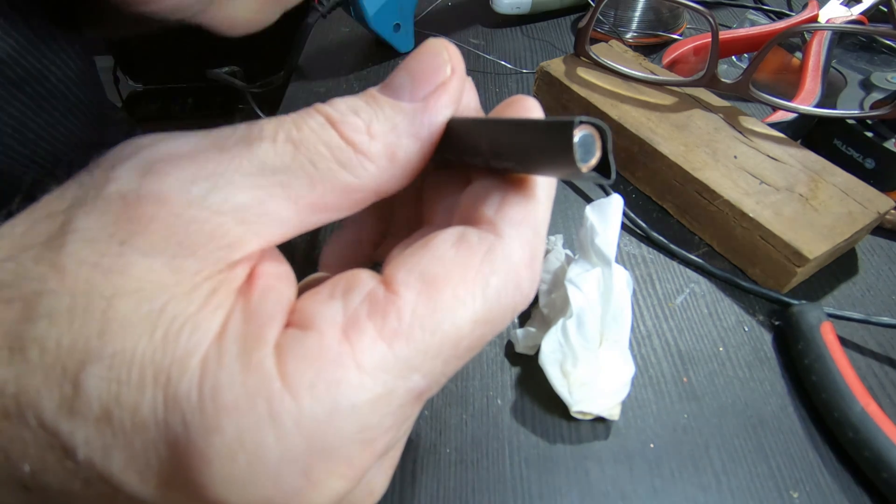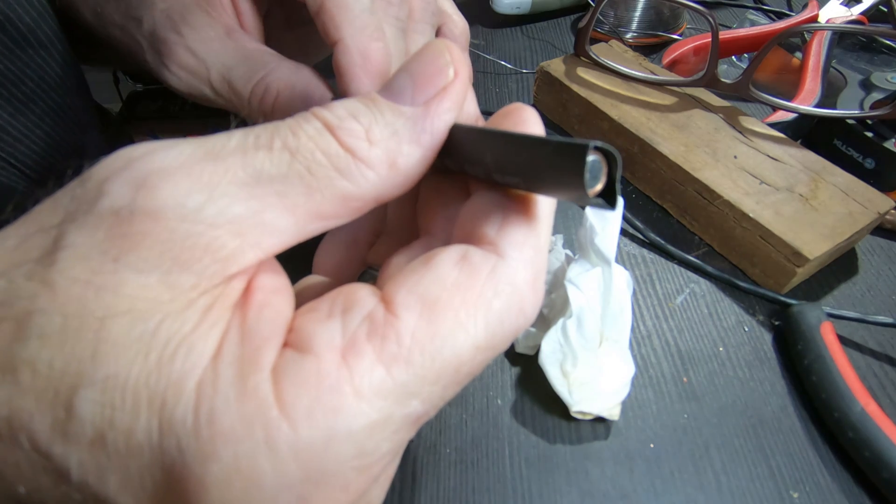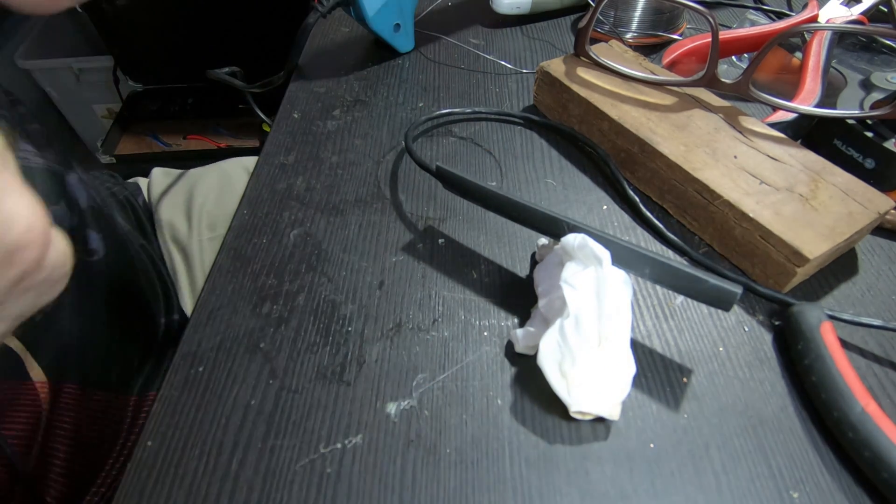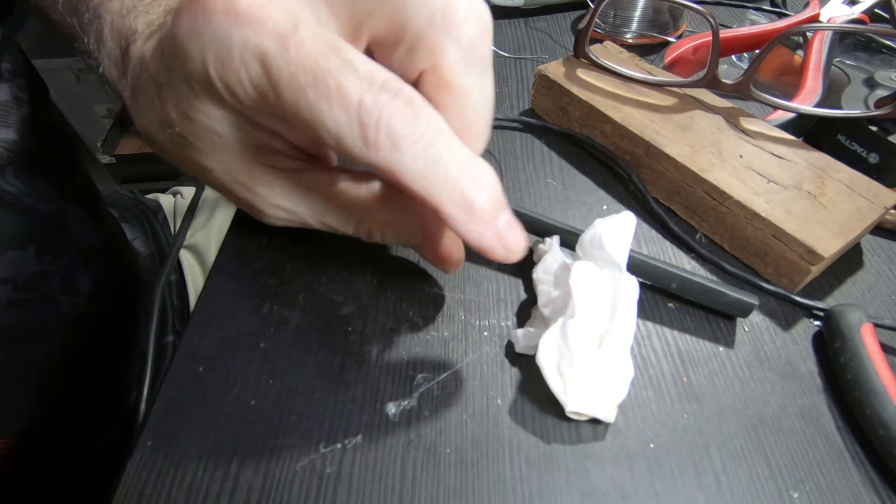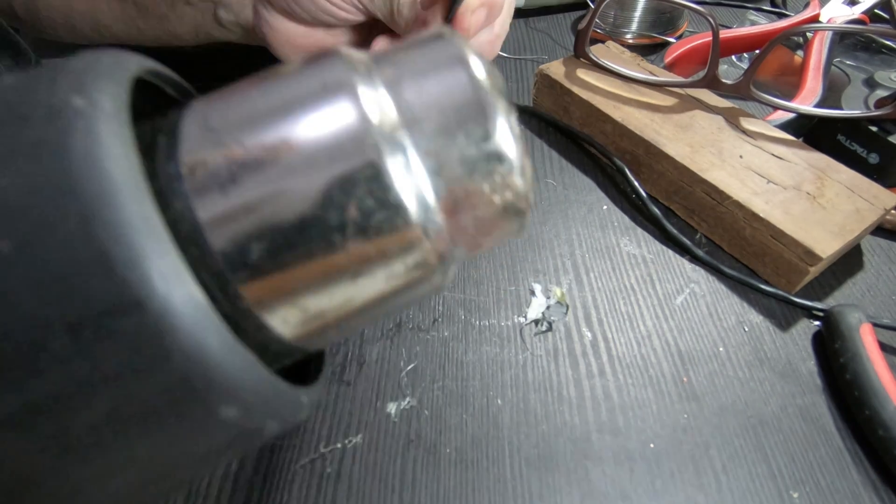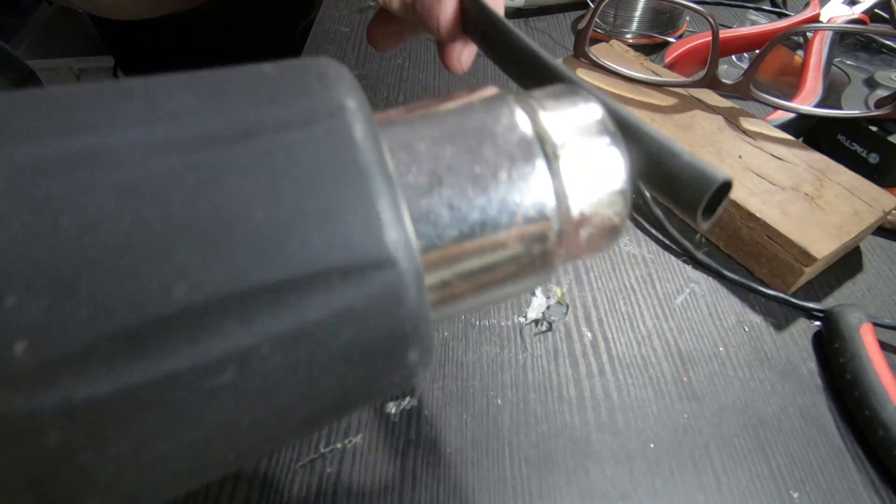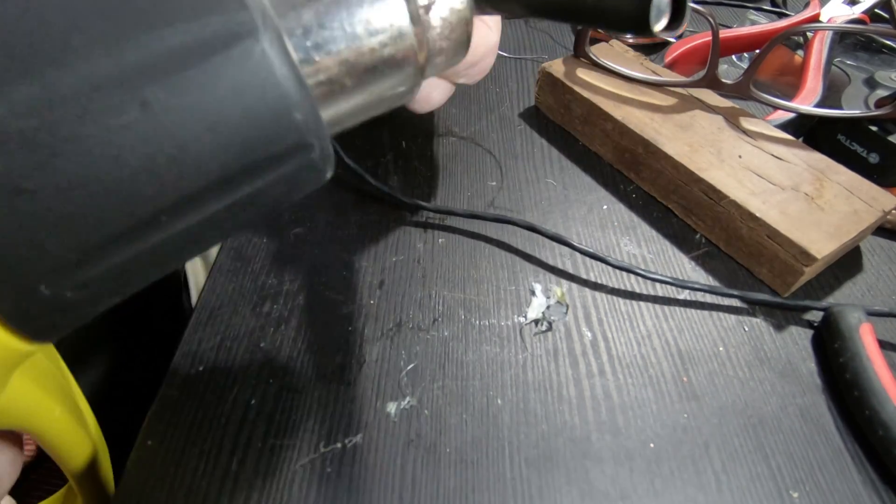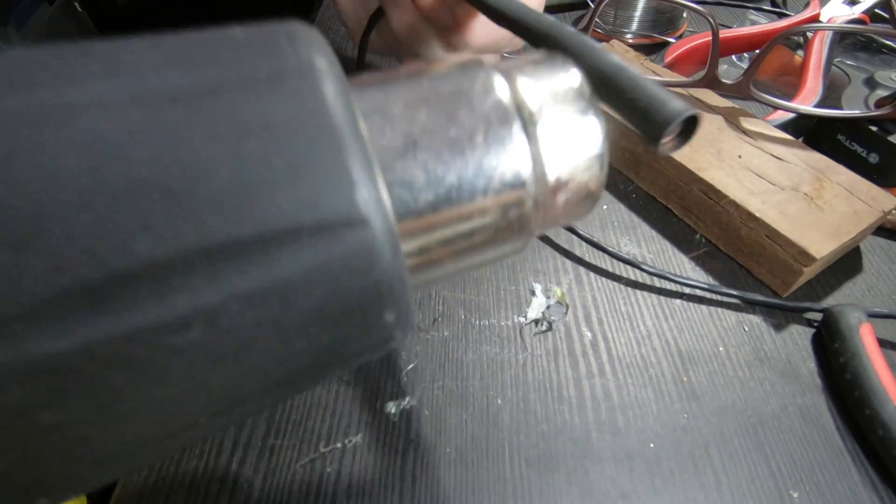And then I will trim the edge with a knife really neatly after it's shrunk. Turn on the shrink gun, keep it moving, turn it over, keep turning it, keep twisting until it goes down around the microphone.